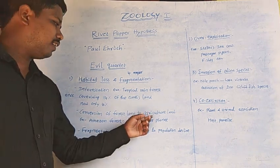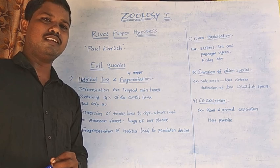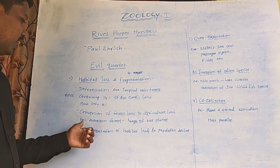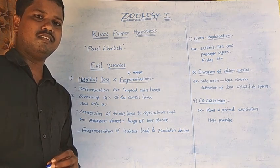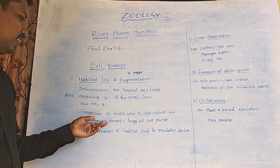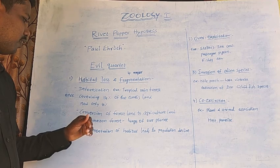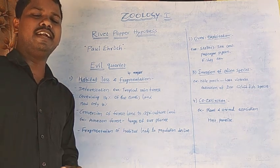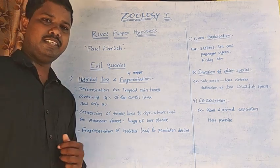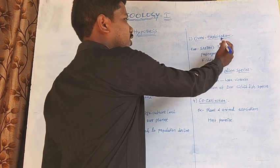Another example is the conversion of forest land to agricultural land, which also leads to a decline in the number of species. The Amazon forests, called the lungs of our planet, are a key example — deforestation there causes species decline. Fragmentation of habitat also leads to population decline.